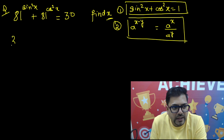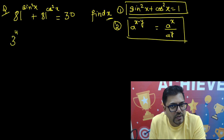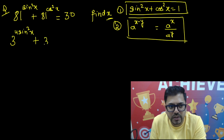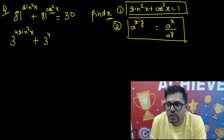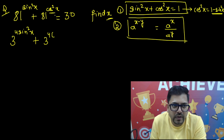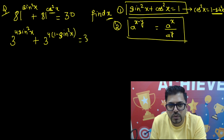Let's get started. 81 can be written as 3 raised to power 4, so the first term becomes 3 raised to power 4 times sin²x. For the second term, similarly we write 3 raised to power 4, and using the trig identity we replace cos²x with 1 minus sin²x. That gives us 3 raised to power (4·(1 − sin²x)), and the equation equals 30.